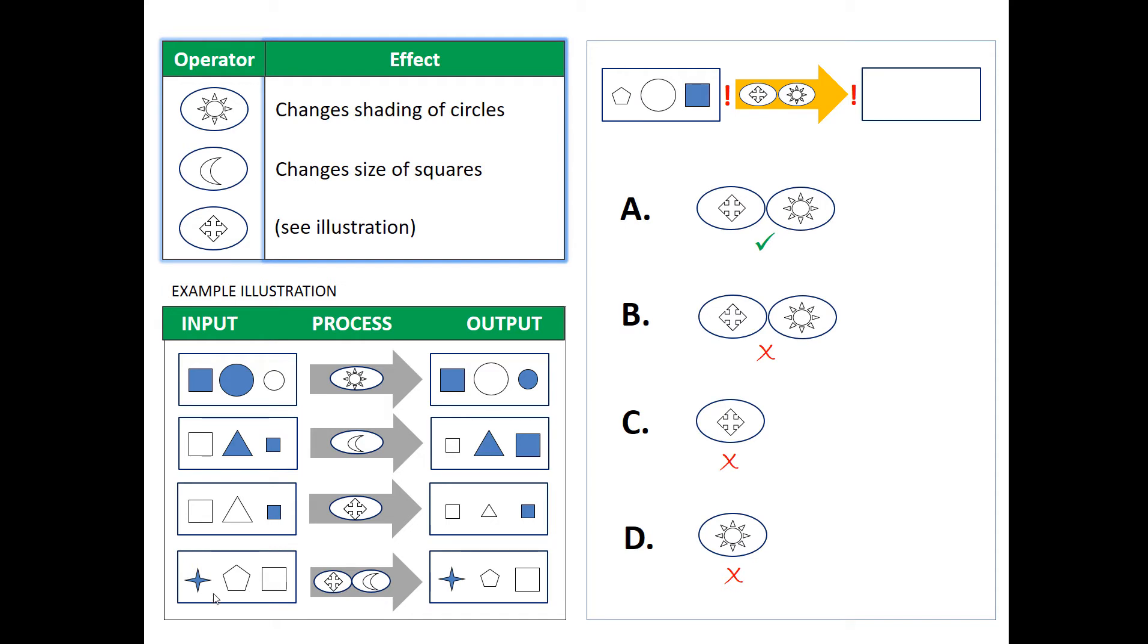And here, when you use it in combination, first the quad arrow made the pentagon and the square smaller, but because the half moon shape changed the size of squares, the square reverted to its original size afterwards.